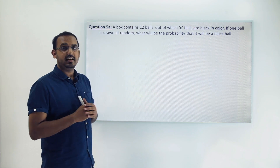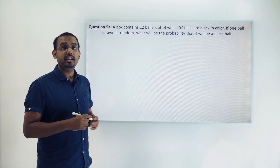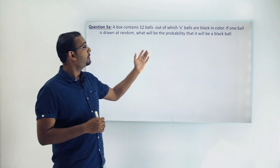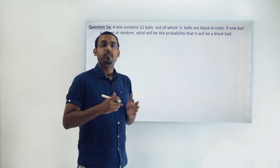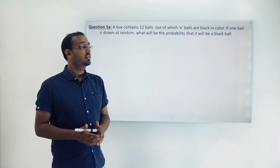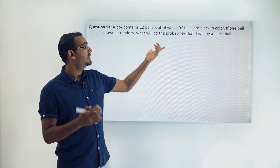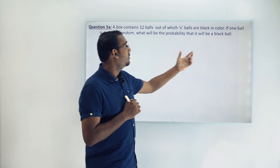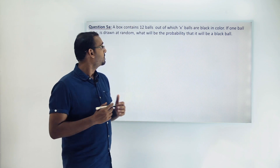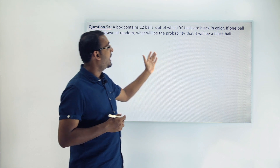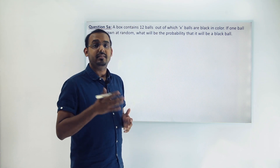The question tells us that we have a box containing 12 different balls, out of which some x balls are black in color. We do not know how many balls are black — we are just saying there are x balls which are black. Now one ball is drawn at random from this box, and we have to calculate the probability that the ball drawn is a black ball.